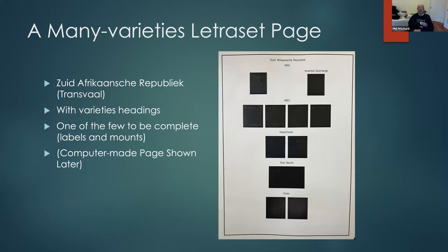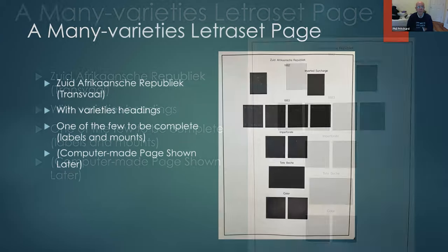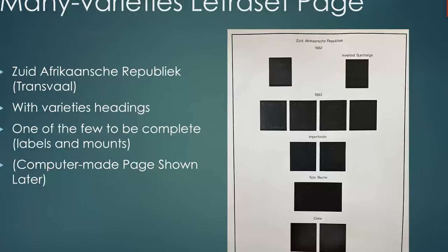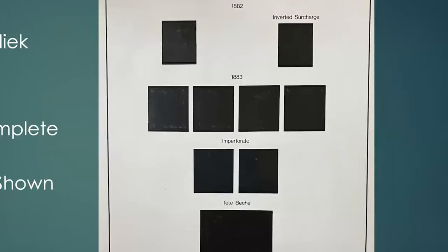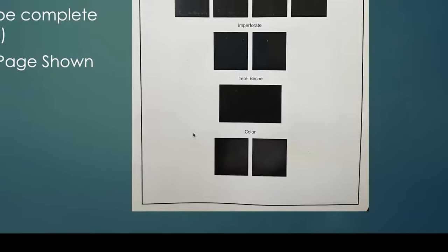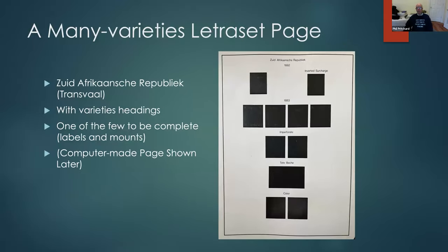Here's an example of one of the letter set pages — the South African Republic, which was the original name of Transvaal, though no one lists it as such. Notice there are headings: there's an inverted surcharge, this particular item has an inverted surcharge variety, this set has some imperforates, some tête-bêche, and some color varieties. It's just one of the few pages where everything was in place and all the labels were done as well.